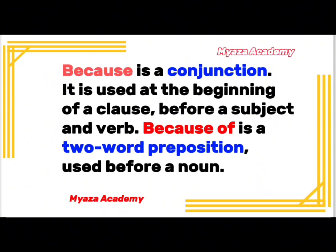So the difference is that 'because' is a conjunction which is used at the start of a clause before a subject or verb. And 'because of' is a two-word preposition which is always used before a noun.